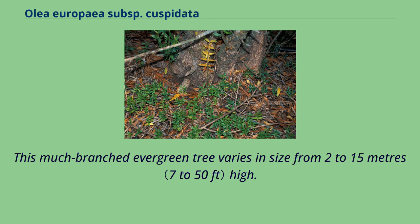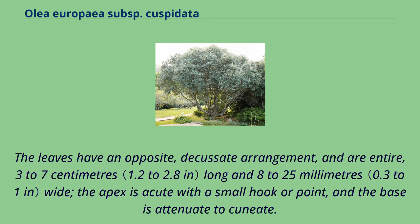This much-branched evergreen tree varies in size from 2 to 15 meters high. The leaves have an opposite, decussate arrangement, and are entire, 3 to 7 centimeters long and 8 to 25 millimeters wide. The apex is acute with a small hook or point, and the base is attenuate to cuneate.